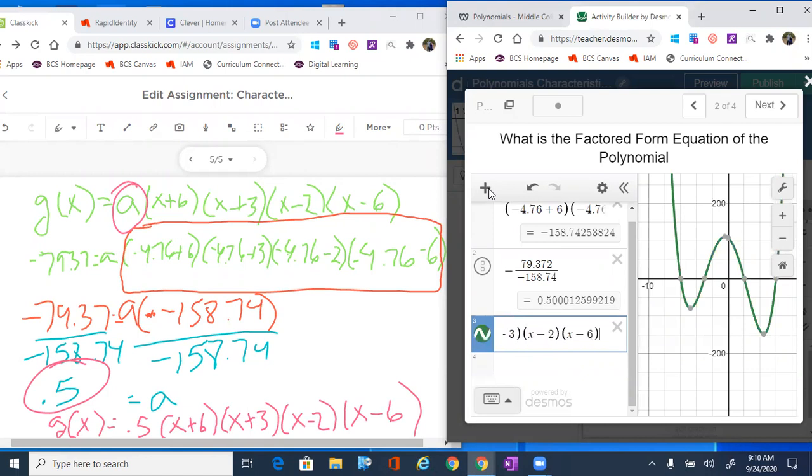And boom! Notice what happens—we verified it. It was blue, we've now made it over to green. We have created the correct function model of that quartic.